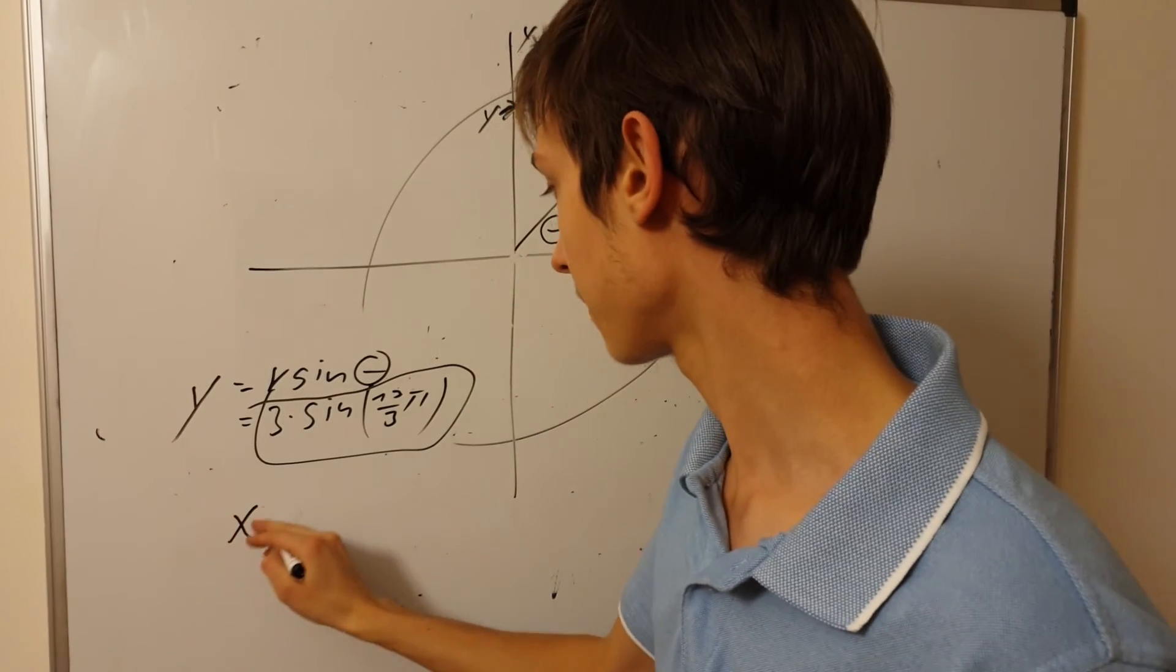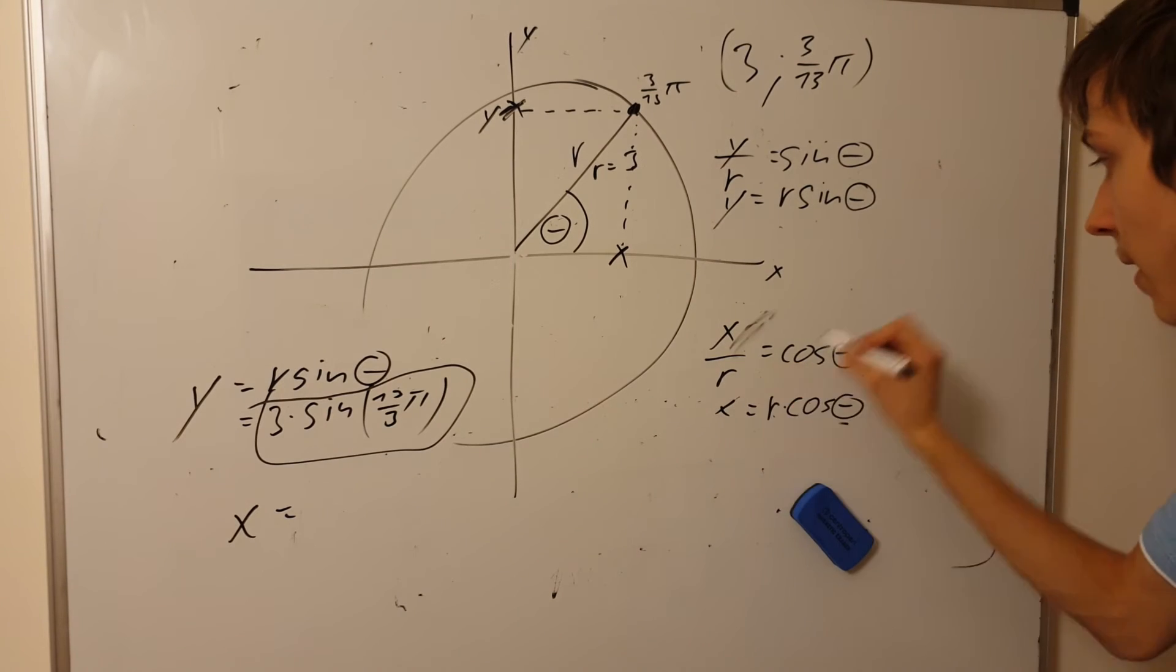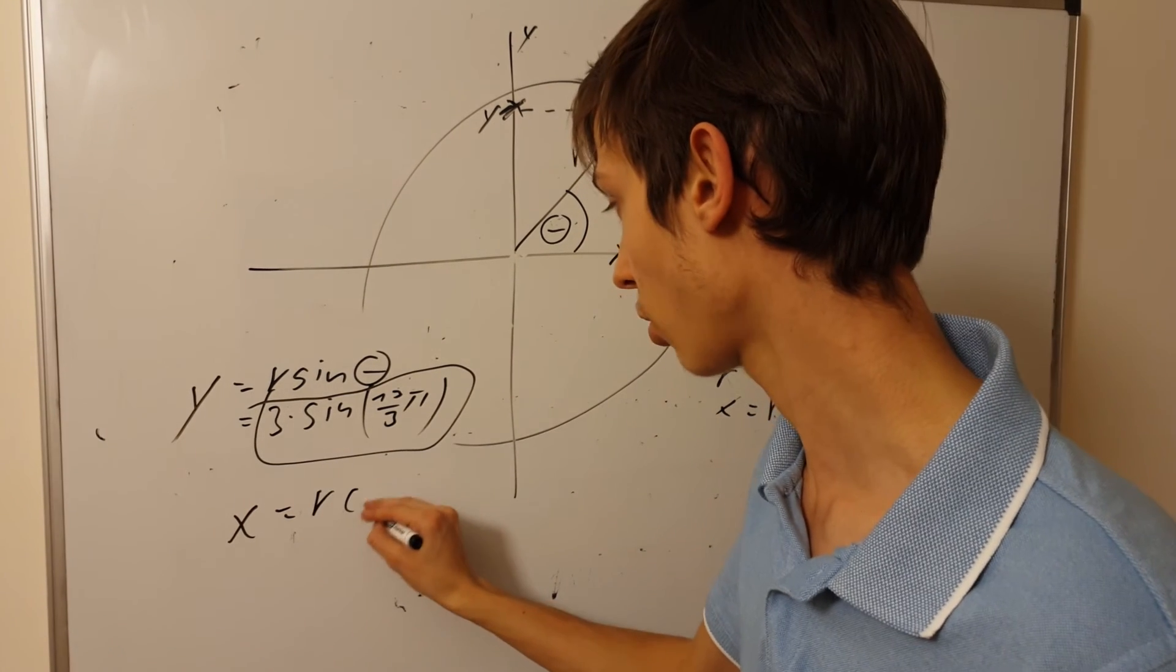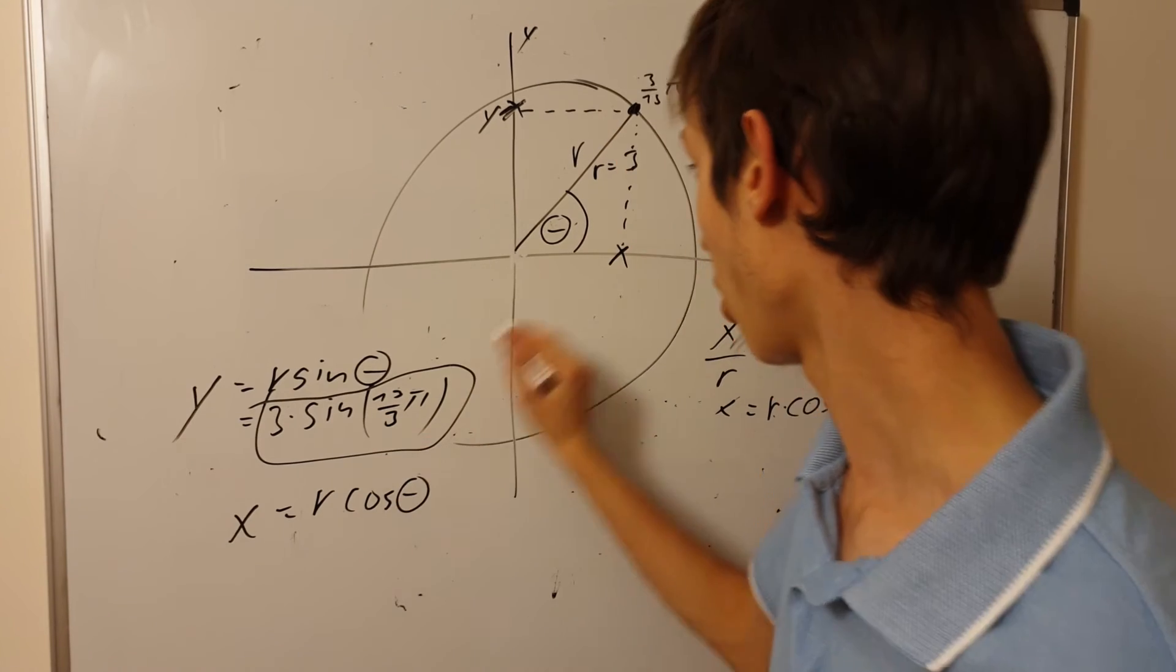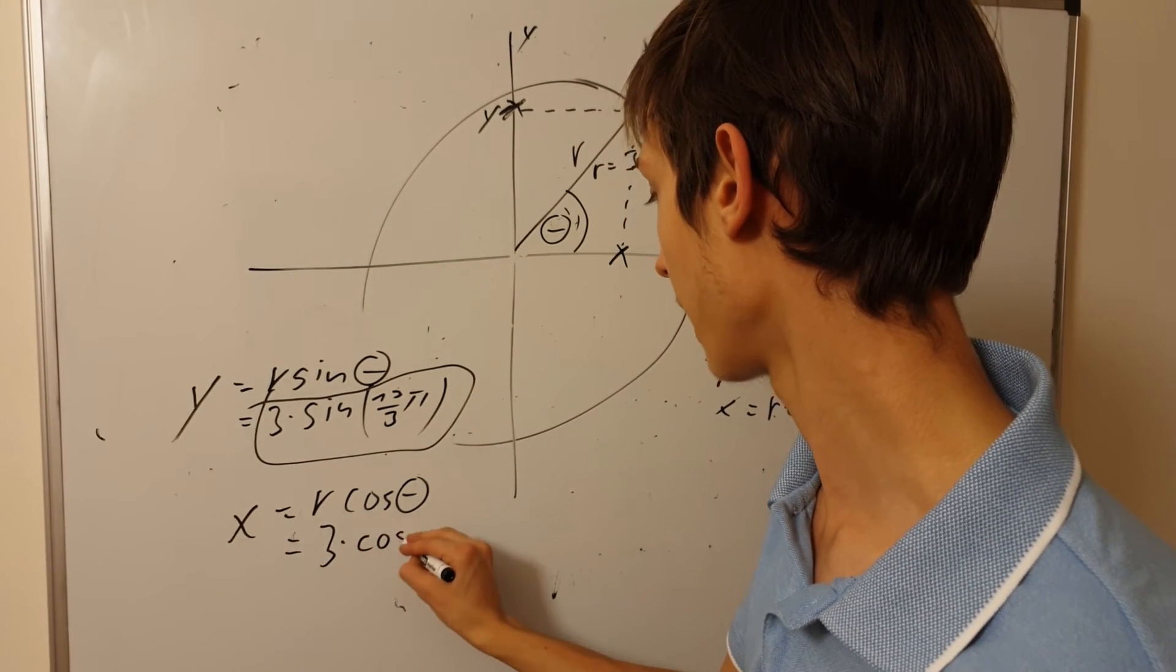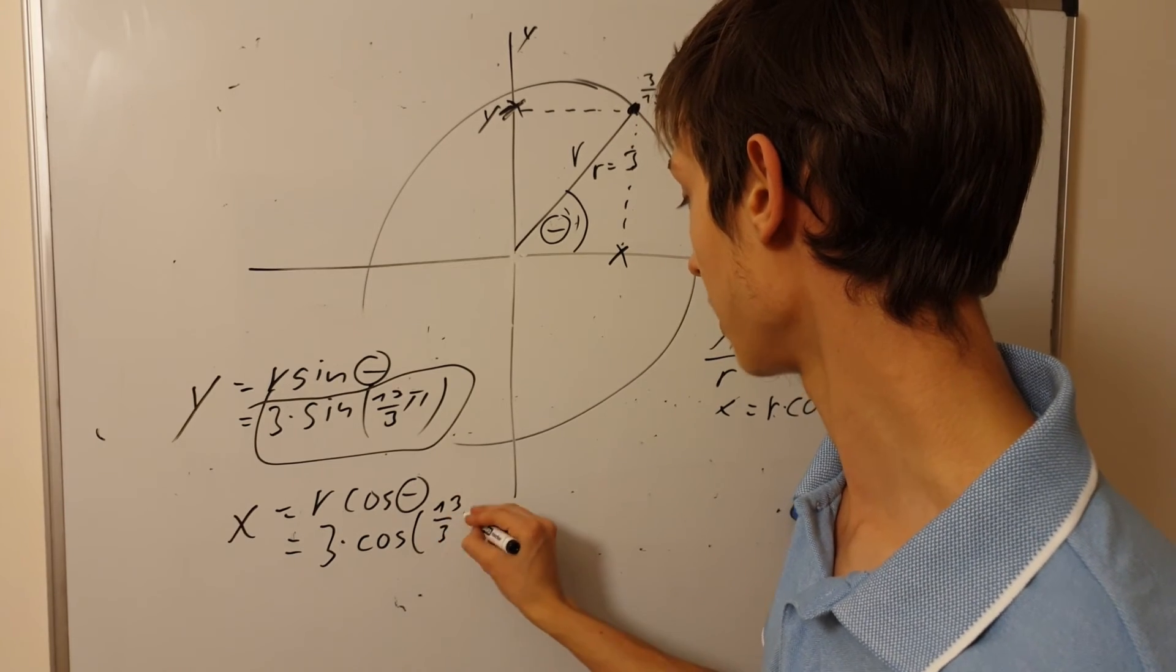And then for x, x is going to be, as I showed right here, it's the radius again times cosine. So radius times cosine of the angle, the same angle of this exact angle. And so it's going to be 3 times cosine of 13 over 3 pi.